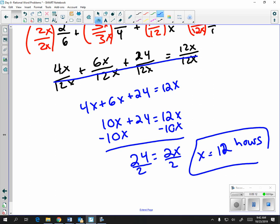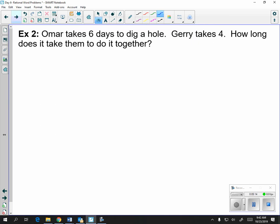If you need to set up another example, Omar takes 6 days to dig a hole, and Jerry takes 4. So we have 2 people. Something plus something equals how many holes that we're digging.